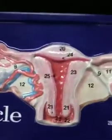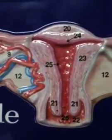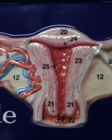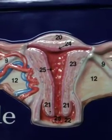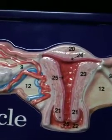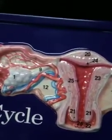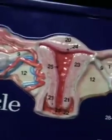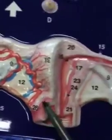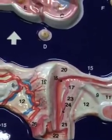Over here, demonstration of the bleeding phase of the endometrium. And back over here we have the sacro-uterine ligament.